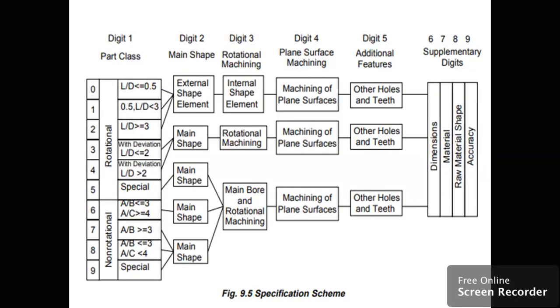In the specification scheme, there are nine digits with rows and columns. Digit 1 indicates whether objects are rotational or non-rotational. Digit 2 indicates the main shape of the objects—whether circular, square, rectangular, symmetric, or other shapes.